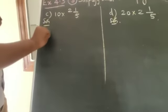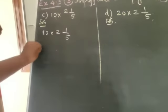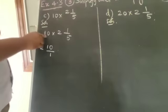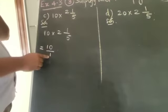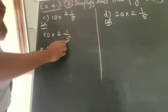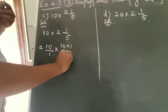First, 10 × 2 1/5 equals 10. The denominator of a whole number is 1. Convert to improper fraction: 2 × 5 = 10, 10 + 1 = 11 over denominator 5. So 10/1 × 11/5.